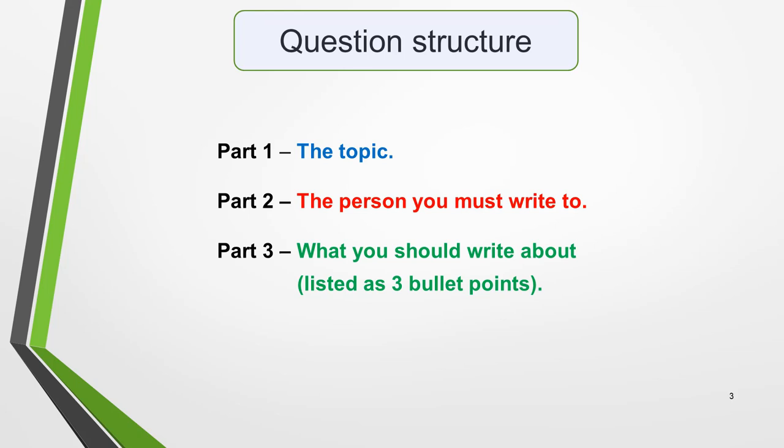First, the structure of the question. All questions for IELTS letters have the same structure. They're made up of three parts. Part 1 is the topic, Part 2 is the person you must write to, and Part 3 is what you should write about, listed as three bullet points.